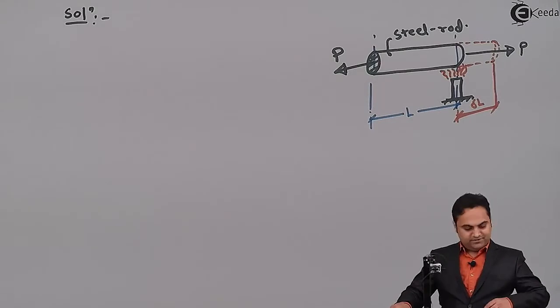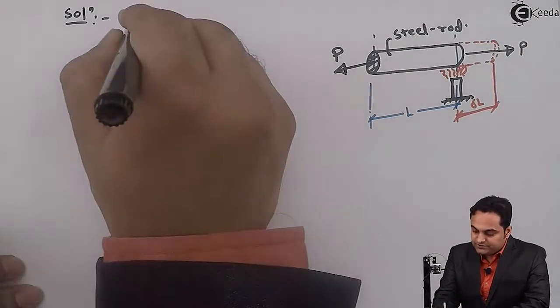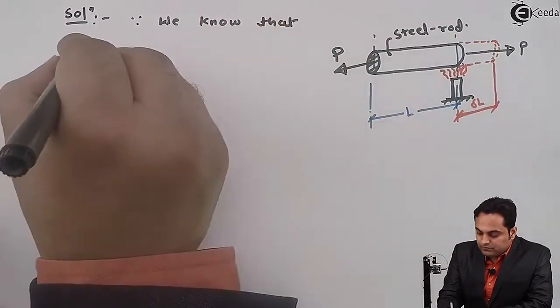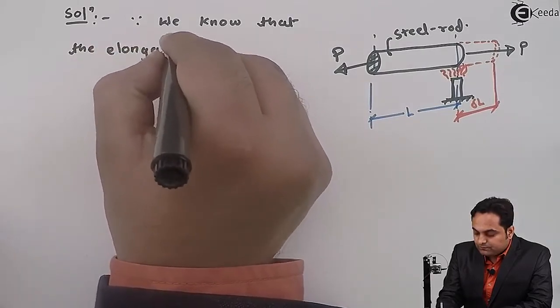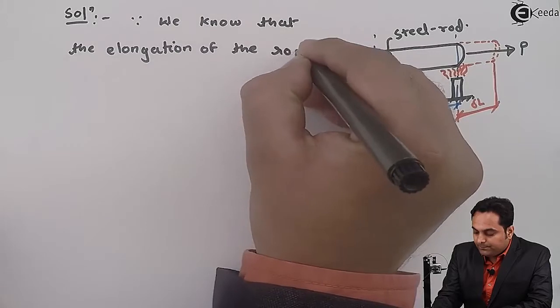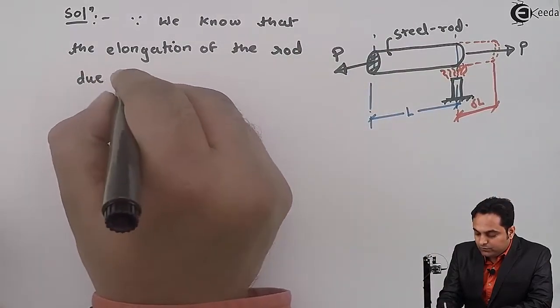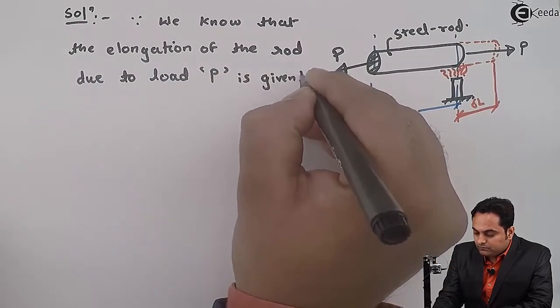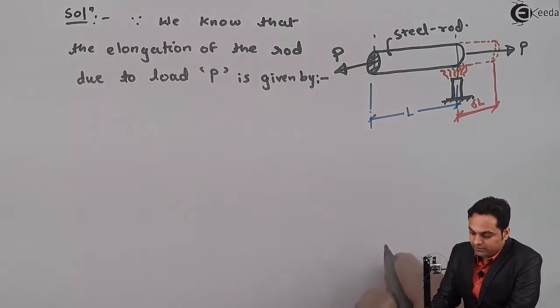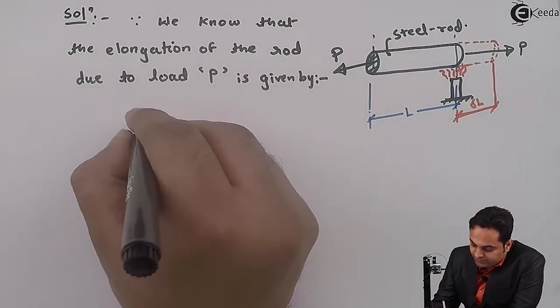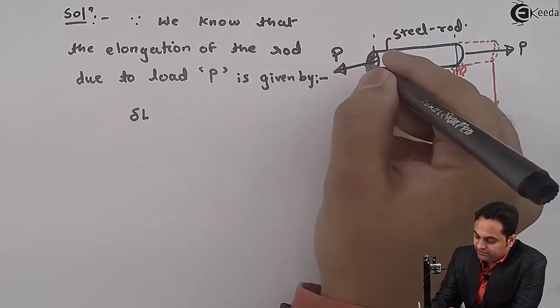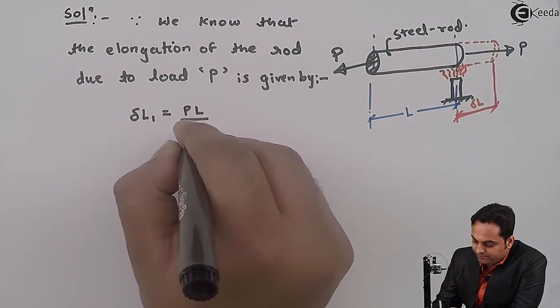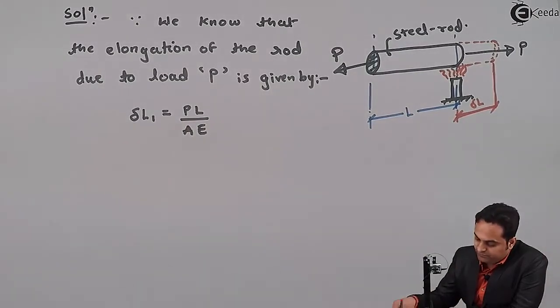So let us get started with the solution. Here I will say that since we know that the elongation of the rod due to load P is given by, elongation is nothing but the deflection. And it is denoted by delta L. Since we are finding the elongation because of load P, I will denote it as delta L1. And that is equal to PL upon AE. The formula of deflection.